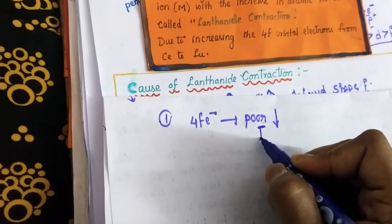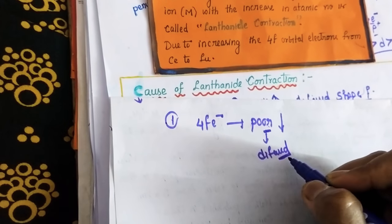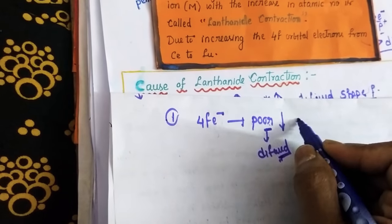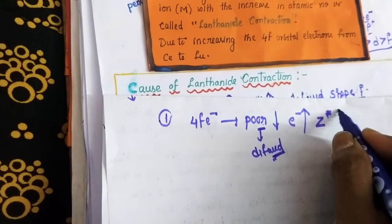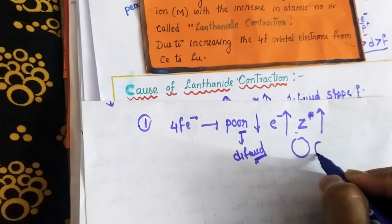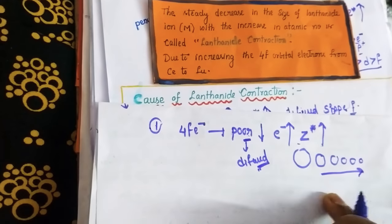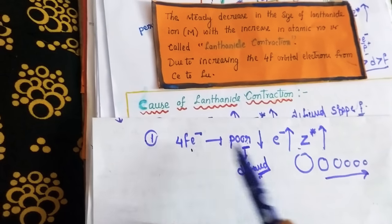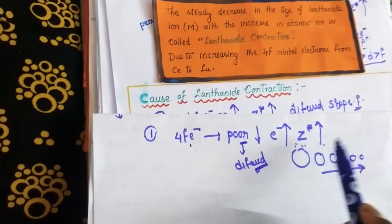Due to poor screening capacity — because of the diffused shape of 4f orbitals, they cannot properly protect the outermost electron from nuclear attraction — as the number of 4f electrons increases, the effective atomic number (Z*) also increases and size gradually decreases. This is lanthanide contraction; the main reason is the poor screening capacity of 4f electrons due to their diffused shape.